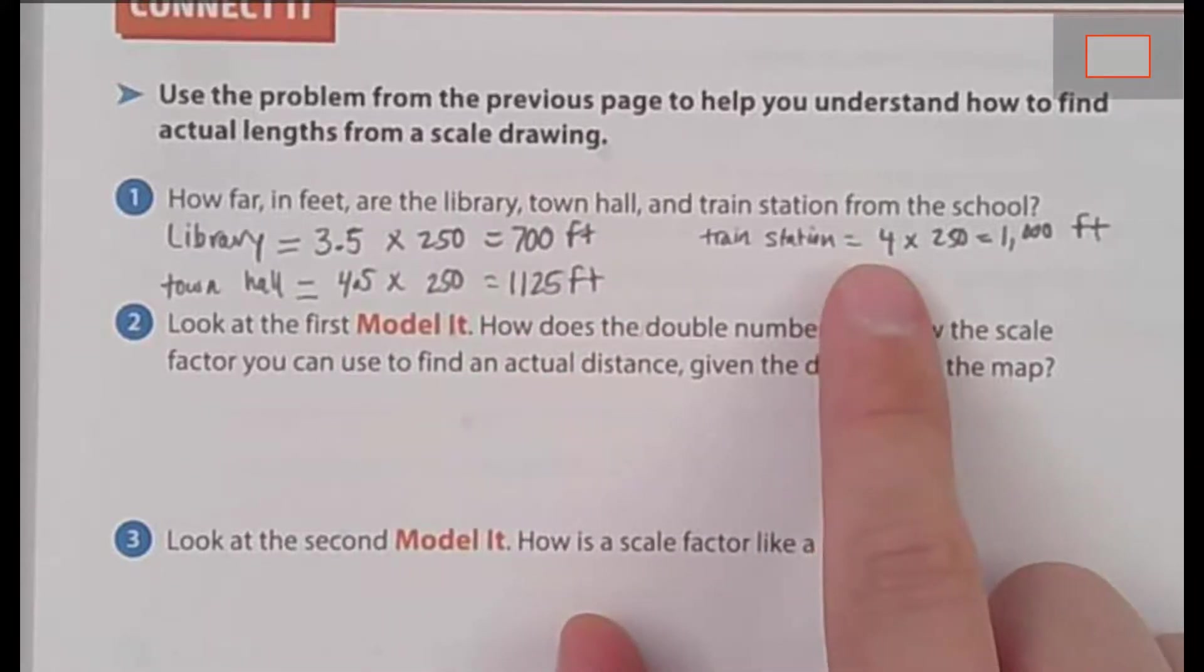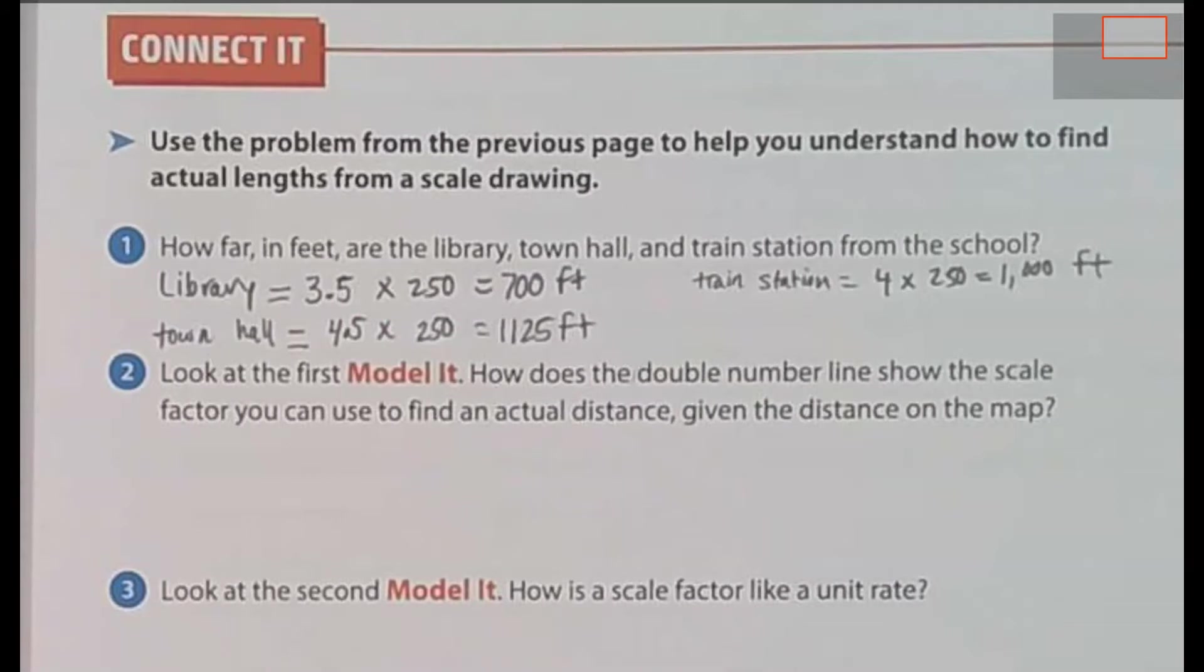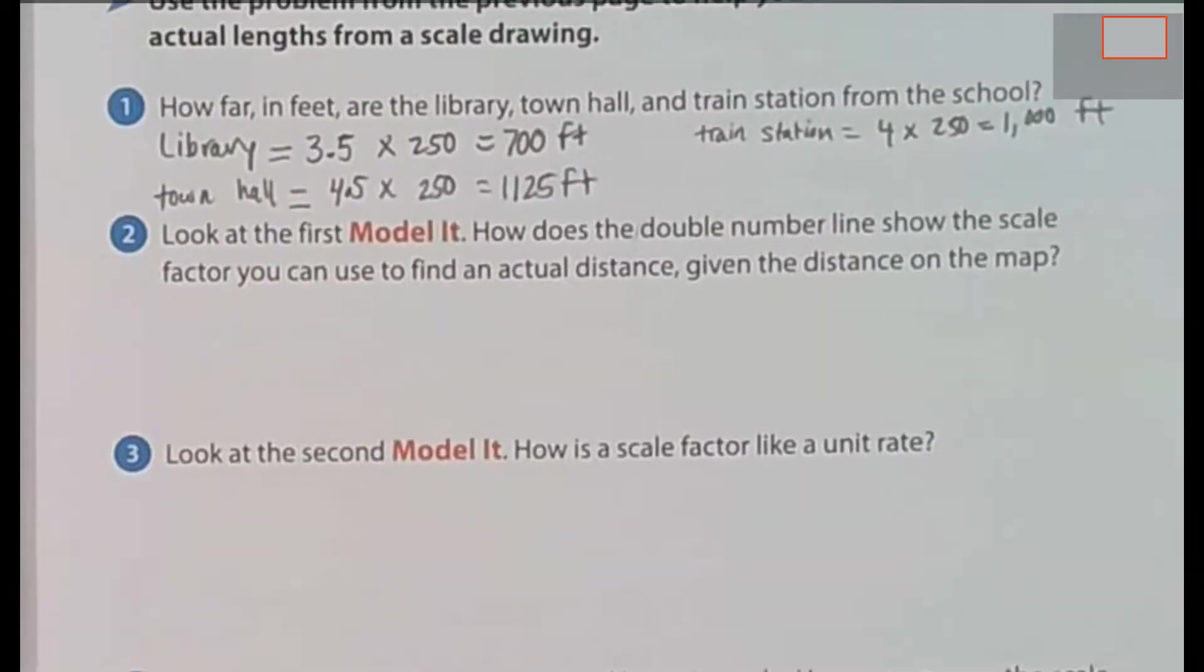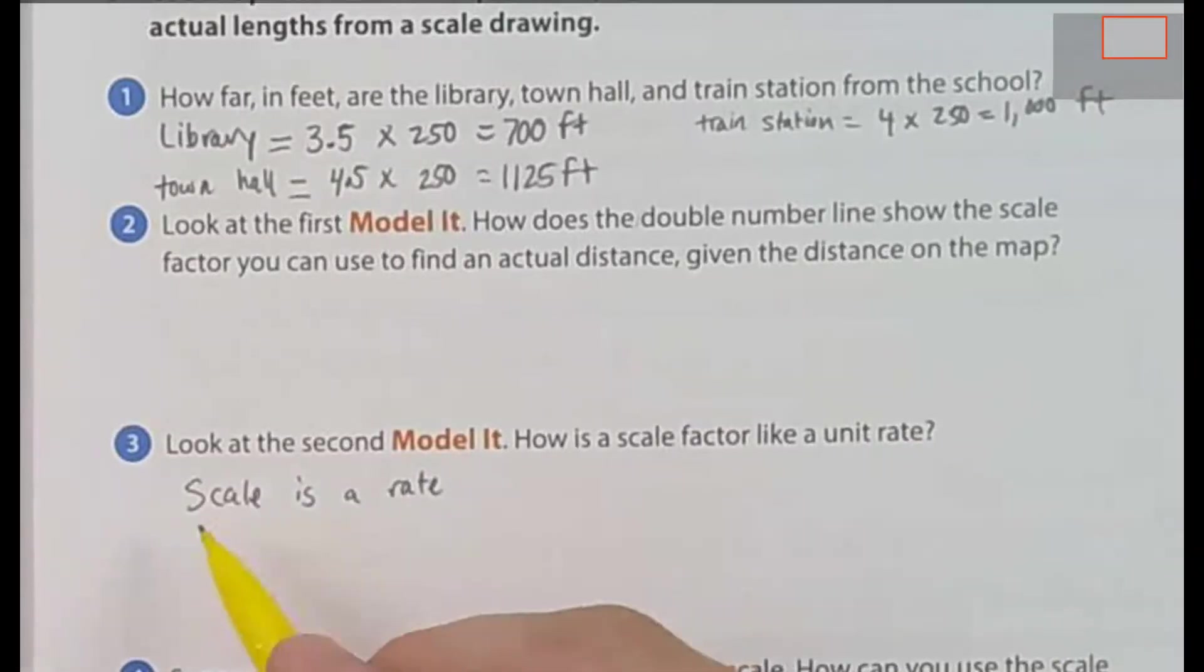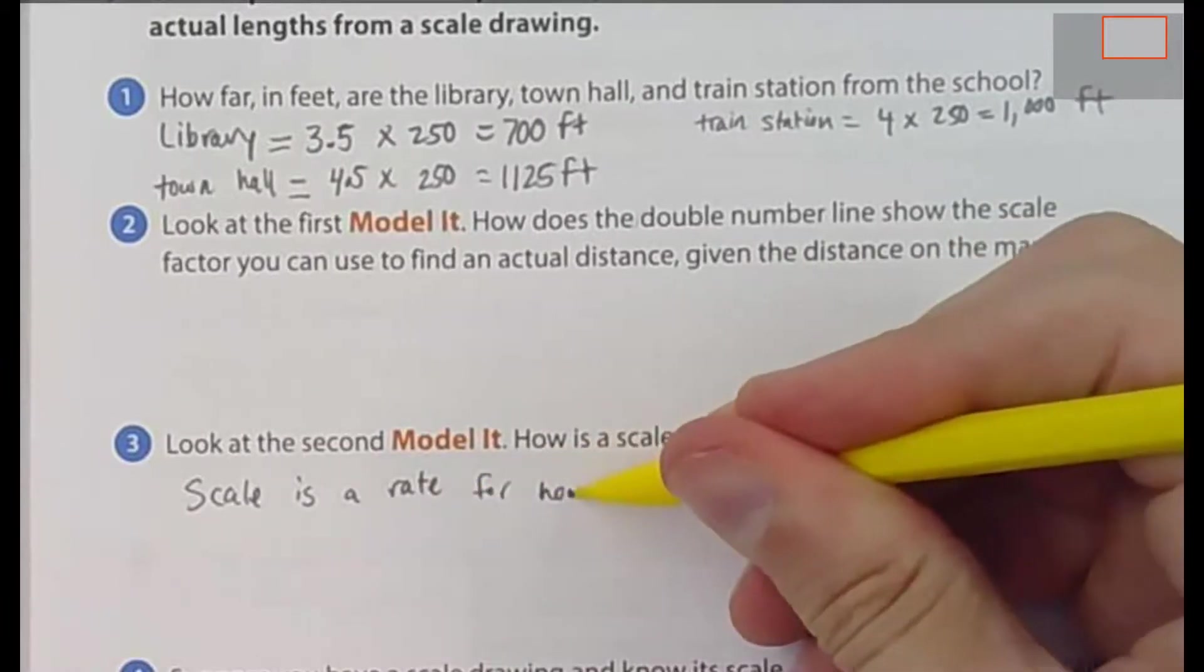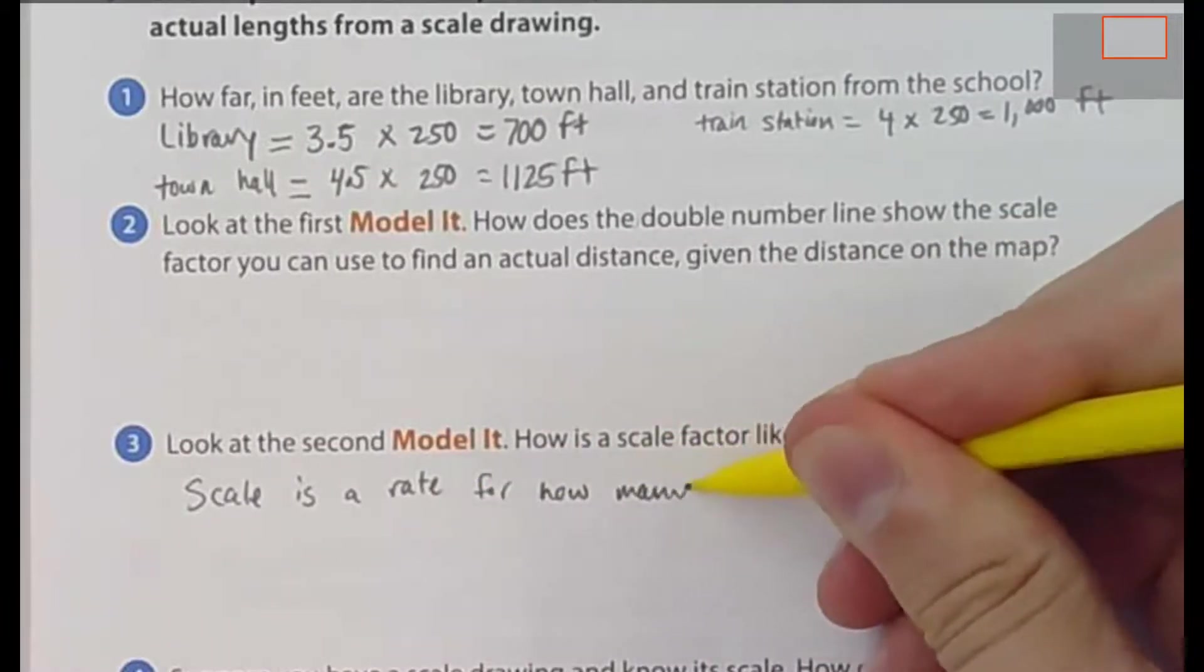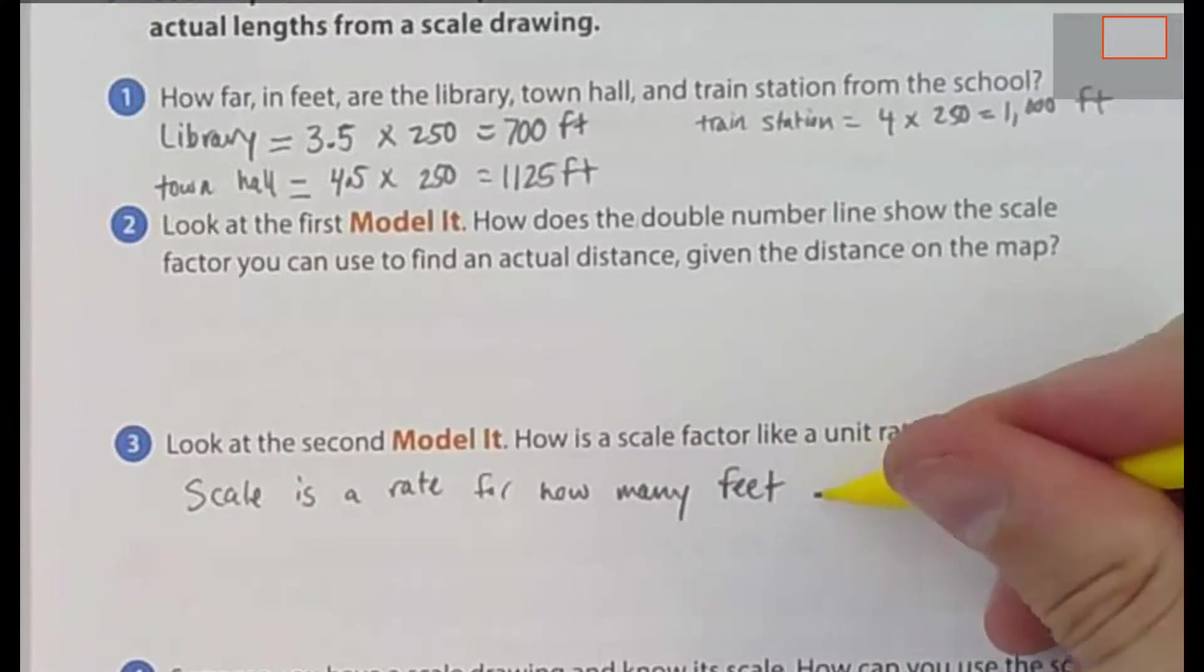Let's skip question 2 and move on to question 3. It says, look at the second model and say, how is the scale factor like a unit rate? Well, it's pretty simple. Our scale is a rate for how many feet equal or represent 1 centimeter. And we always know a unit rate is out of 1.